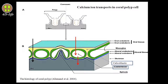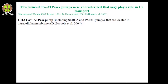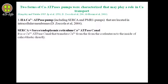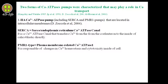Studies by researchers such as Kingsley, Watabe, and colleagues have shown that two forms of calcium ATPase pumps play a role in the transport of calcium. The first type is the 2A calcium ATPase pumps, including SERCA and PMR1 pumps, which are located in the intracellular membranes. SERCA, or sarco-endoplasmic reticulum calcium ATPase, transfers calcium from the coelenteron to the inside of the calicoblastic layer. PMR1, or plasma membrane-related calcium ATPase 1, is responsible for calcium homeostasis and cytotoxicity within the cell.